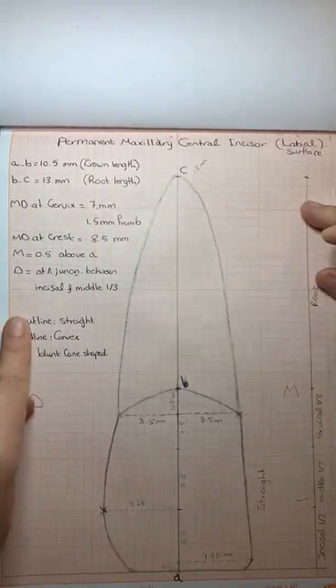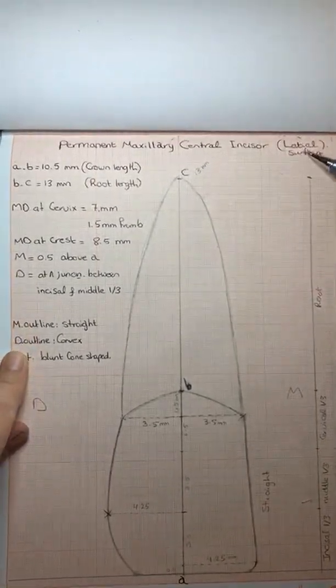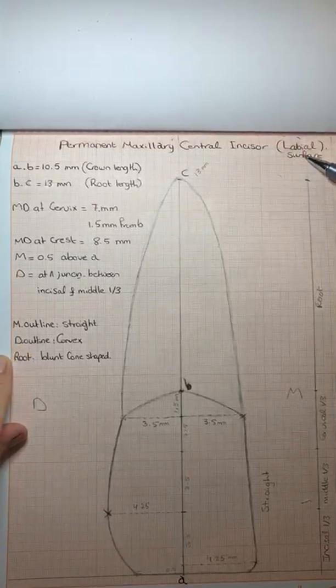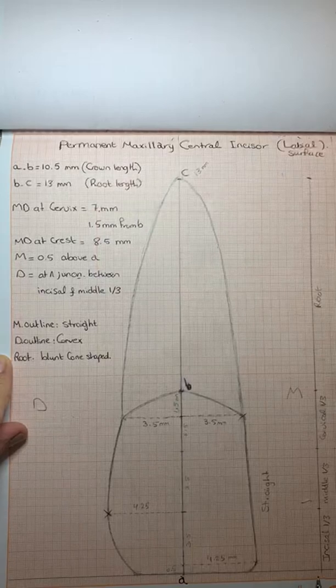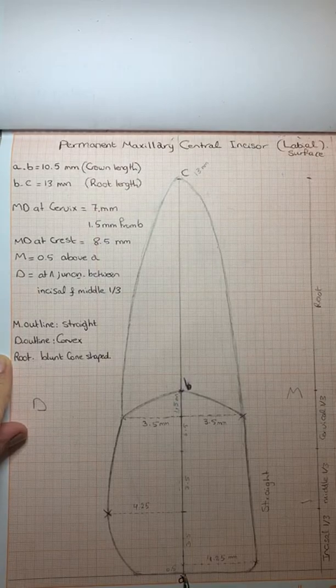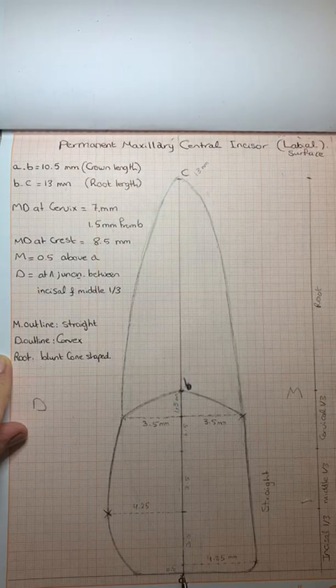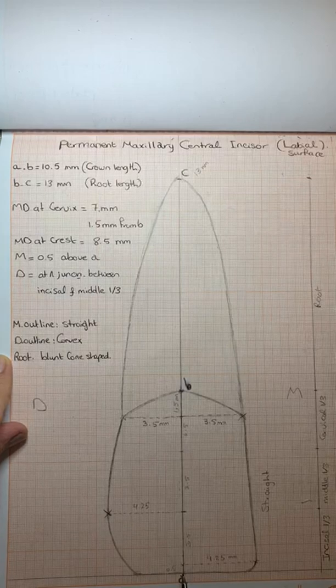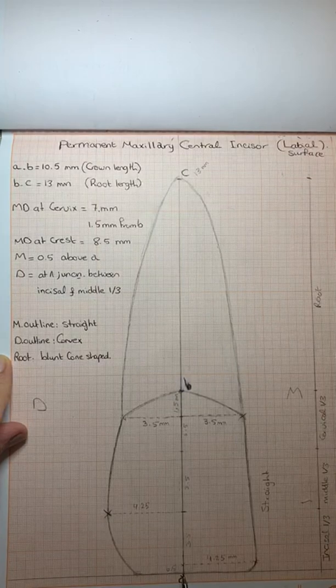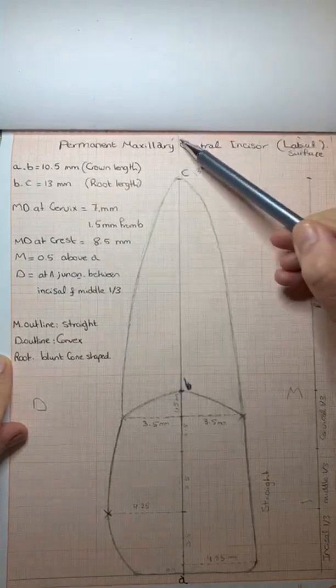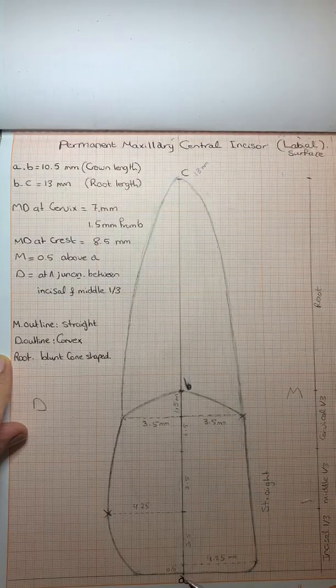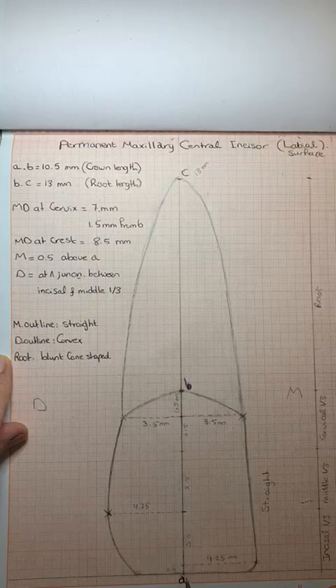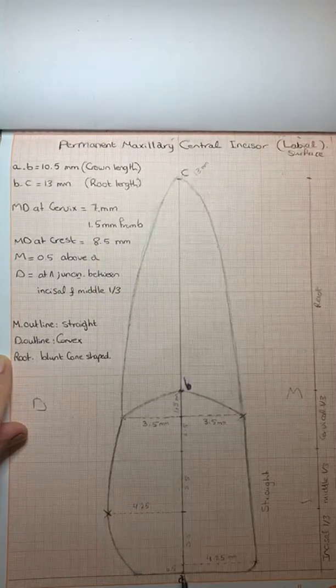The permanent maxillary central incisor, firstly the labial surface. First of all, we will start with drawing a horizontal line, which is 0.5 away from the end of the paper. And the same for the wax block. And the vertical line. So horizontal and vertical line and A is the starting point of our drawing.